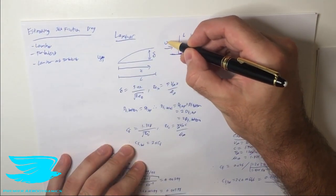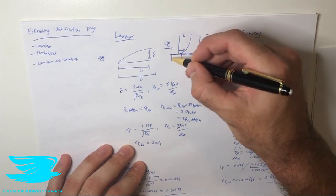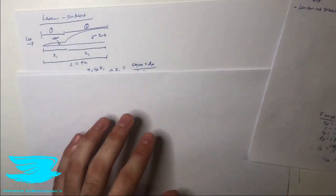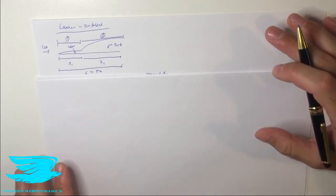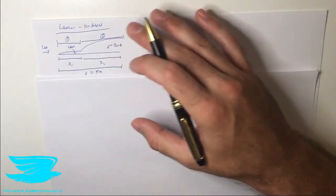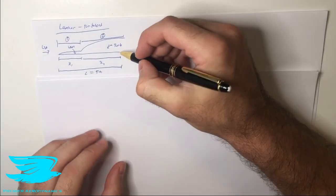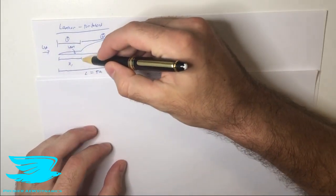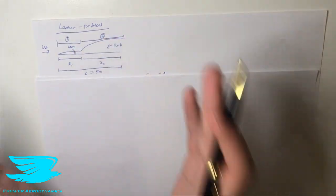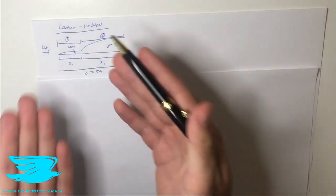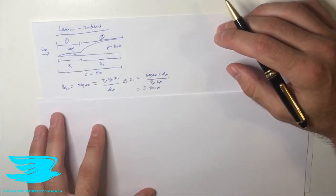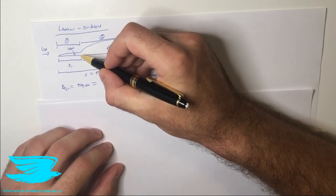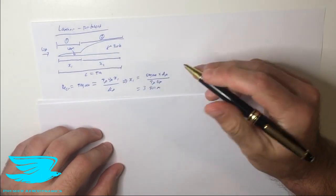In the realistic case, flow comes in, starts off laminar, then transitions to turbulent. We have a flat plate that is 5 meters long; the laminar part has length x1 and the turbulent part has length x2, and together they make up the entire plate. We need to know where the critical Reynolds number is — the point at which the flow transitions from laminar to turbulent. We're going to assume that's 500,000, which is a very standard number; you can pick anywhere between 200,000 and 1,000,000, but 500,000 is most common.